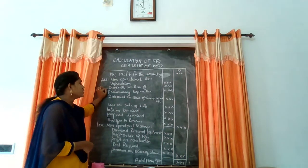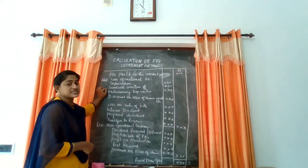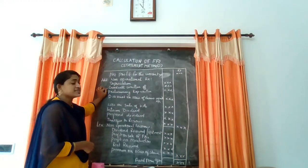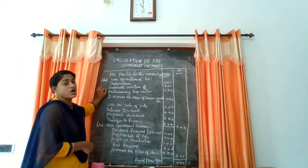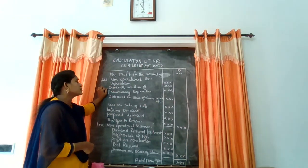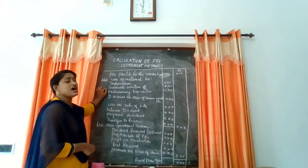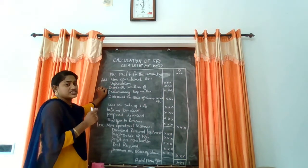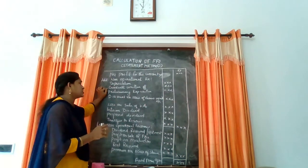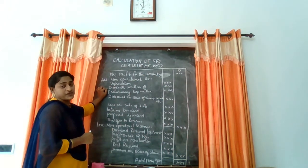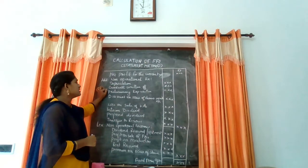The next one is goodwill written-off. Goodwill is an intangible asset which cannot be seen or touched. A part of the goodwill is written-off every year. This goodwill written-off does not affect business operation.